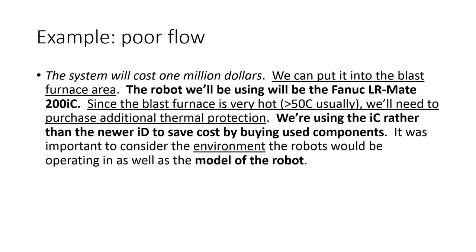Here is the poorly organized example. Note that the formatting is very non-standard and you normally wouldn't put it like this in a report. I've underlined things that relate to the factory's environment — for example, references to the blast furnace area — and bolded things that relate to the robot. As you can see, I have factory following a robot fact, following a factory, following robots, following a conclusion about what we should purchase. My actual big conclusion — how much will it cost — appears as the very first thing: 'The system will cost one million dollars.' All of the information is still there, but because it jumps around, the reader is going to have a lot of difficulty following a particular argument.